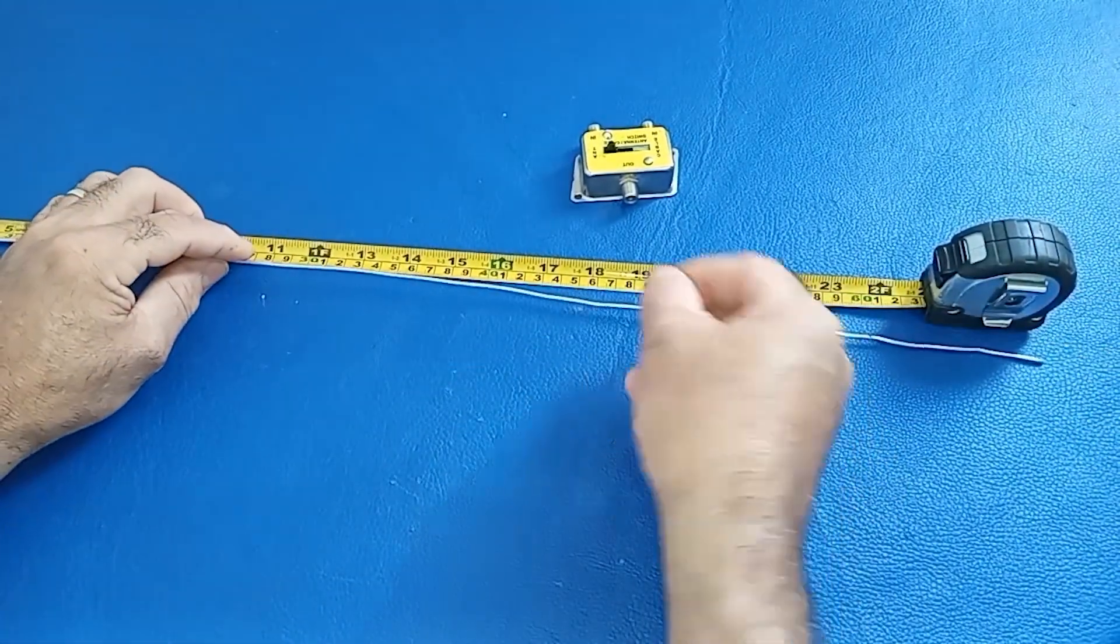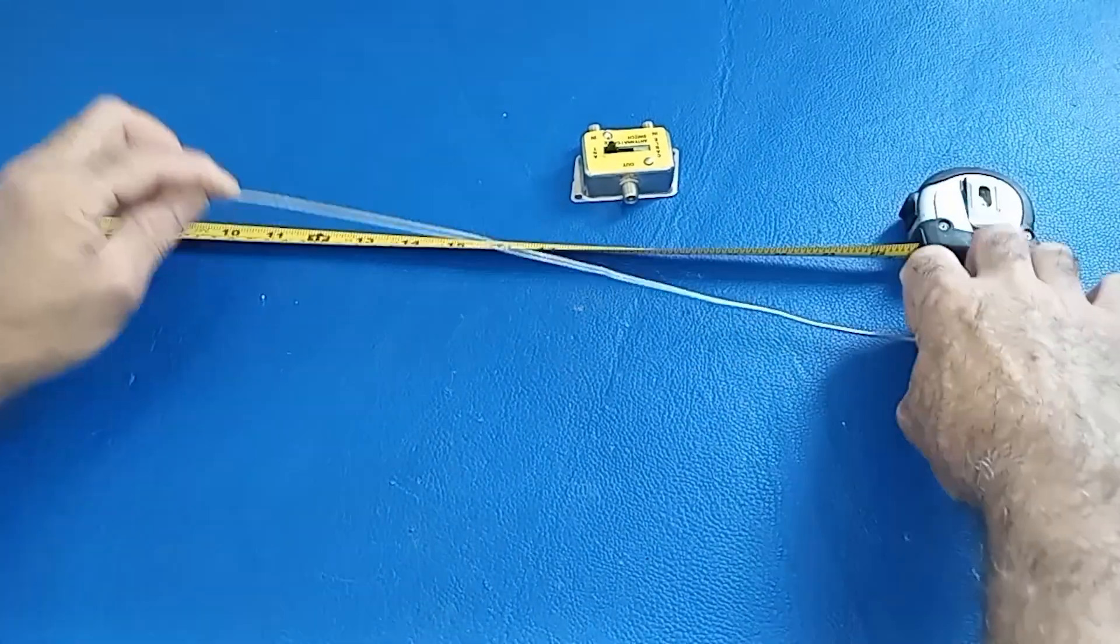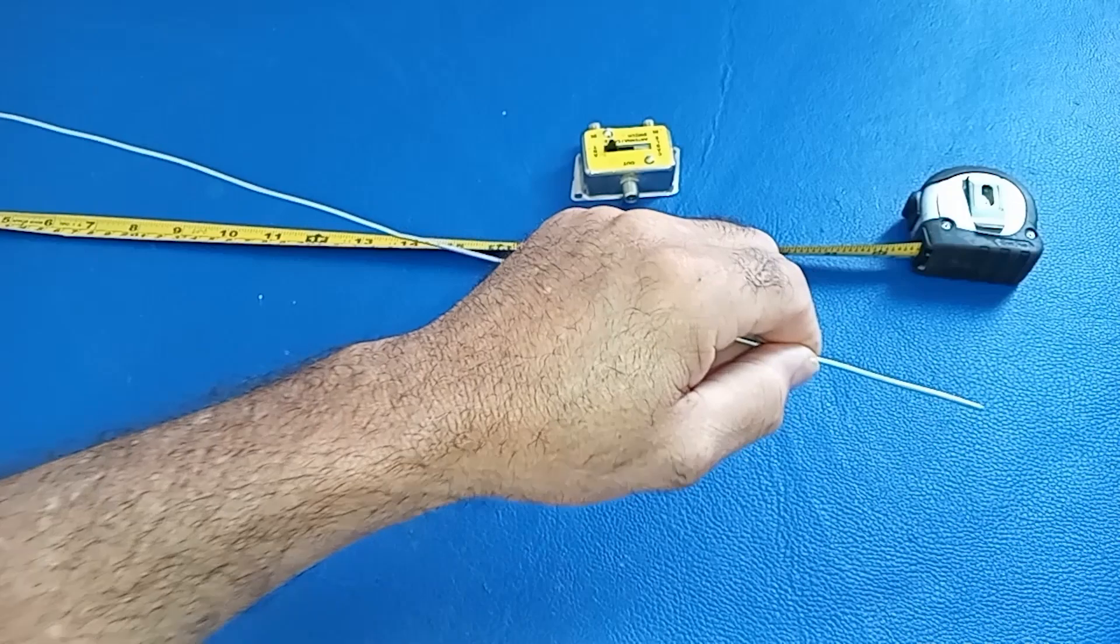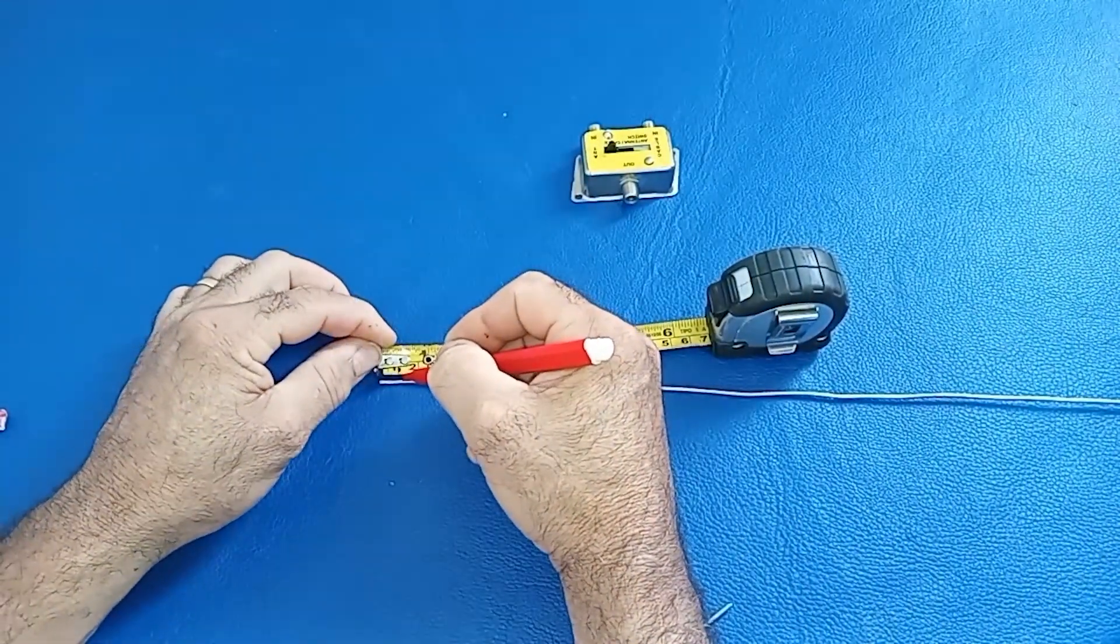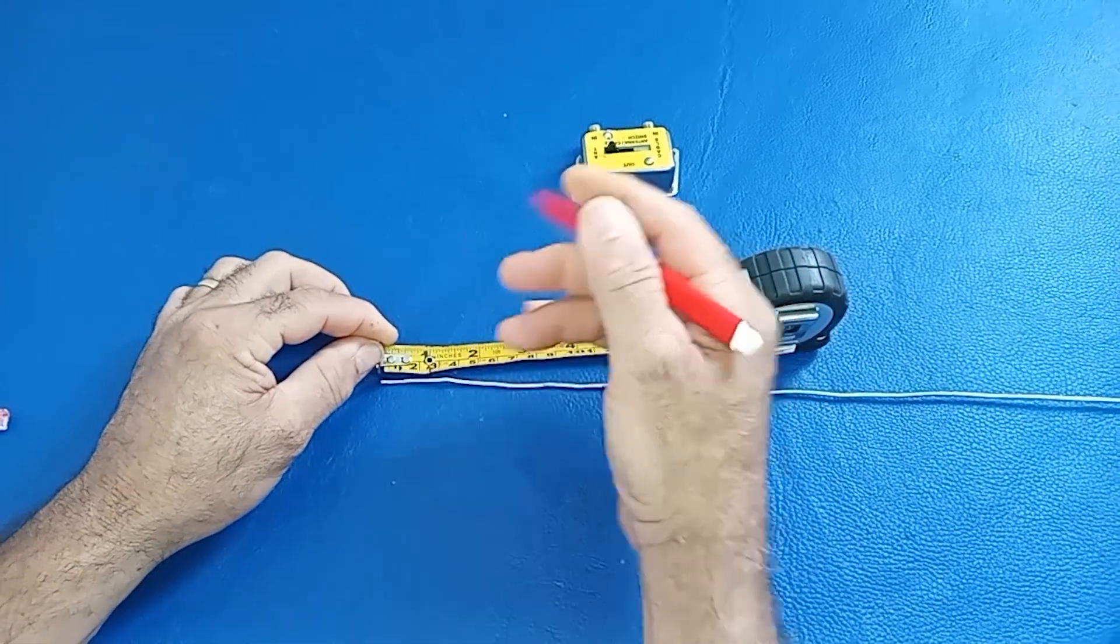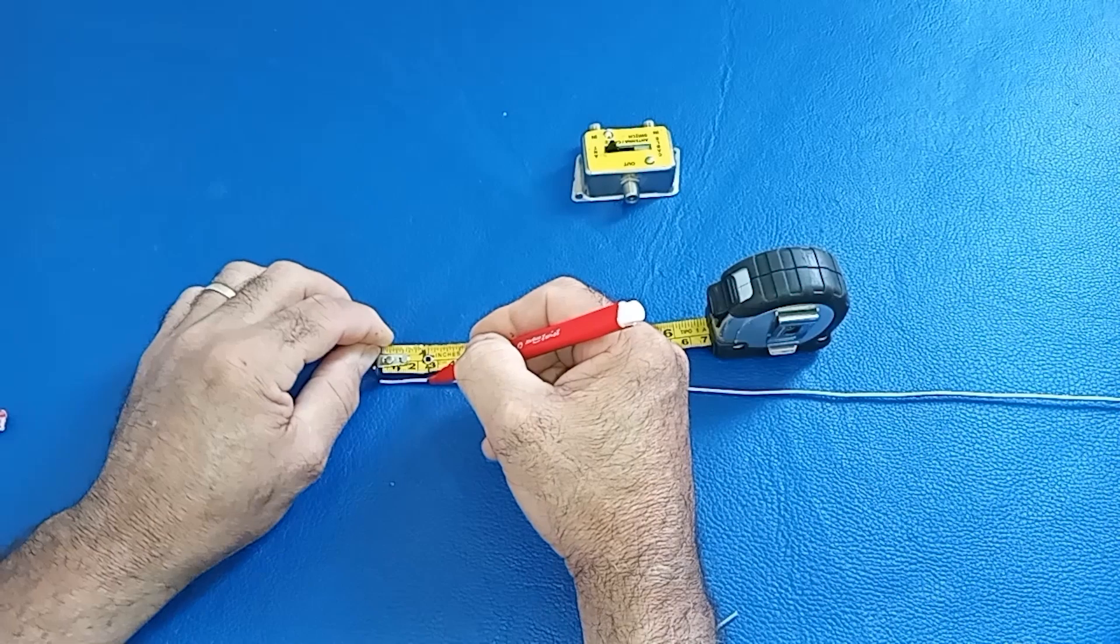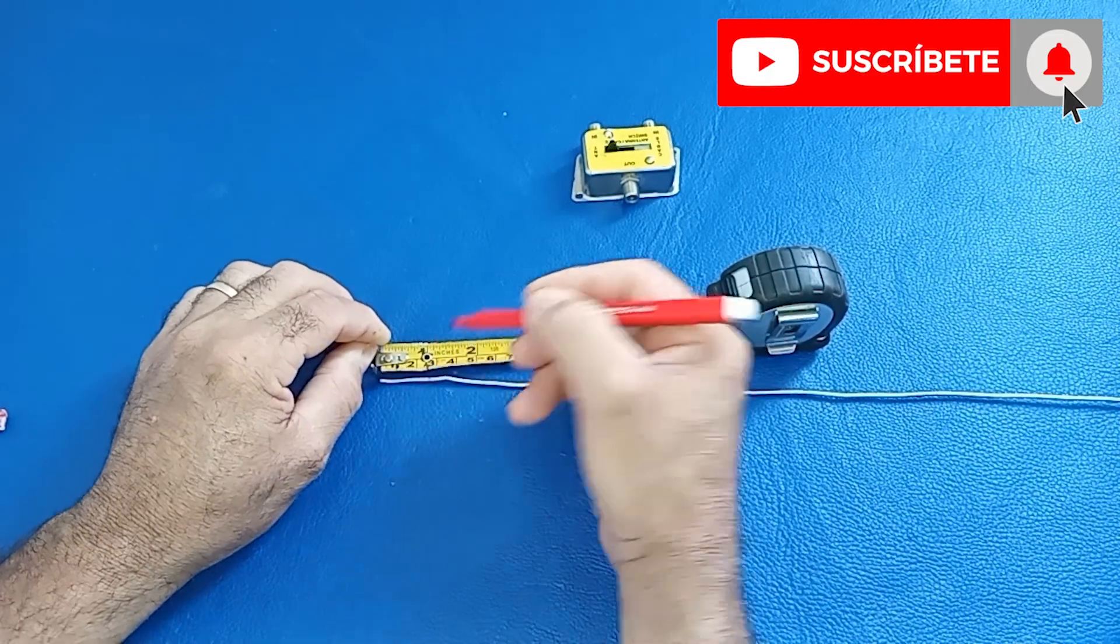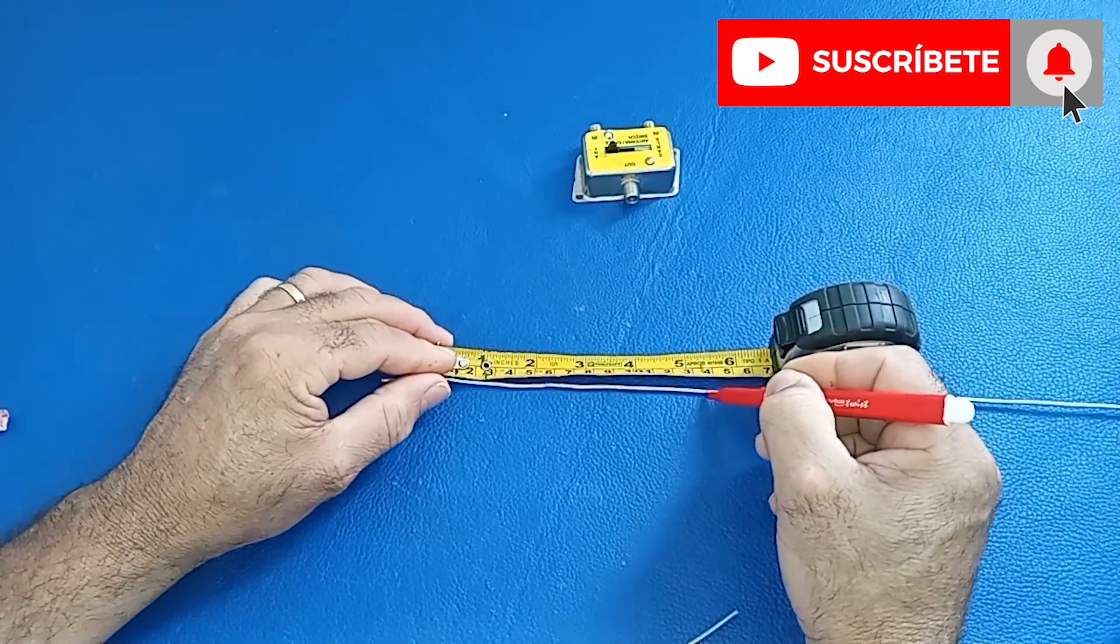Step one, marking the cable. You will need a 63 centimeter cable with a diameter of two millimeters. Start by measuring one centimeter from one end of the cable. Then measure 1.5 centimeters beyond the first mark and make another mark. Repeat this process for the following distances: 13.5 centimeters, 3.2 centimeters, and finally 23.2 centimeters.